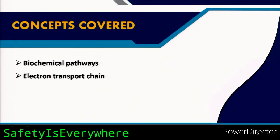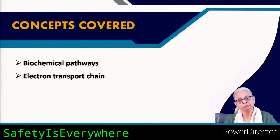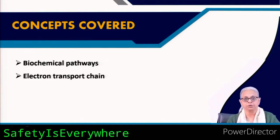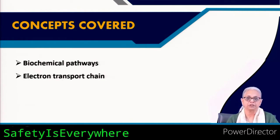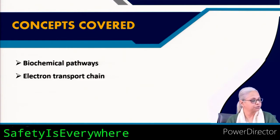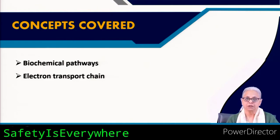Welcome everyone. We're going to look at the electron transport chain and how the three different biochemical pathways — respiration and fermentation — work. Within respiration you have aerobic and anaerobic respiration. We'll take a look at those pathways and how they happen within the prokaryotic cell.